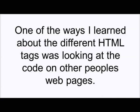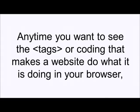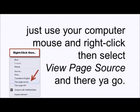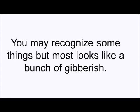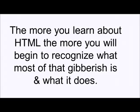One of the ways I learned about the different HTML tags was simply looking at the code on other people's web pages. Anytime you want to see the tags or coding that makes a website do what it's doing in your browser, just use your computer mouse and right-click, then select View Page Source. At first it might look overwhelming like the first time you saw a foreign newspaper — you may recognize some things, but most looks like just a bunch of gibberish.